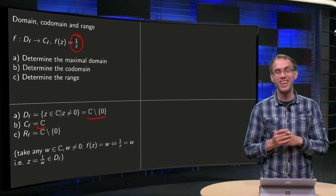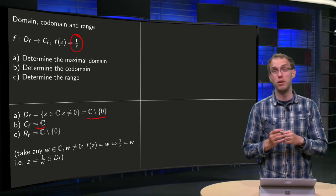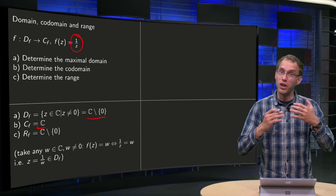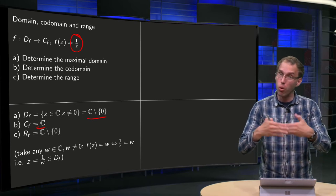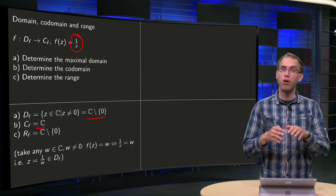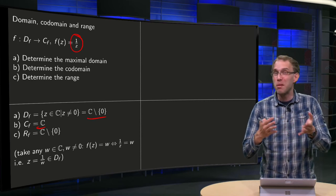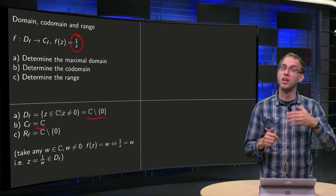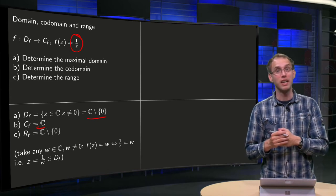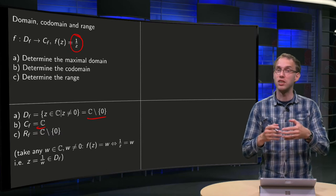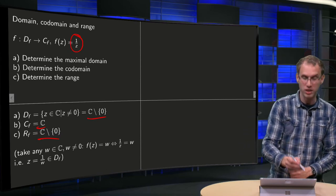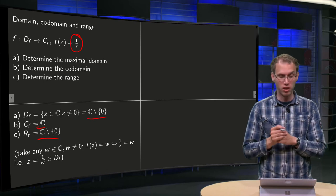And third question, the range. That is usually a lot harder. The range is the set of values you can actually reach by going through all values in the domain, and often it is practically impossible to determine the range. However, in this case we have a rather easy function, just 1 over z, so we can see that you can reach all values apart from 0, so the range equals C but not 0.